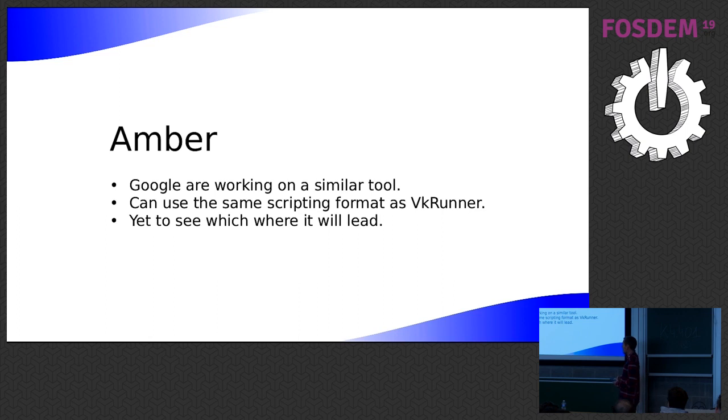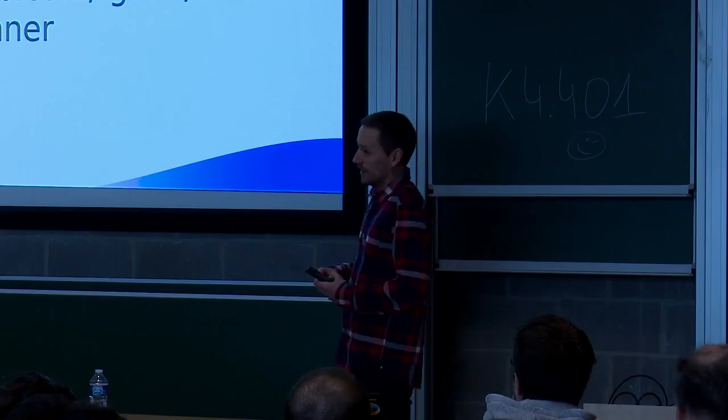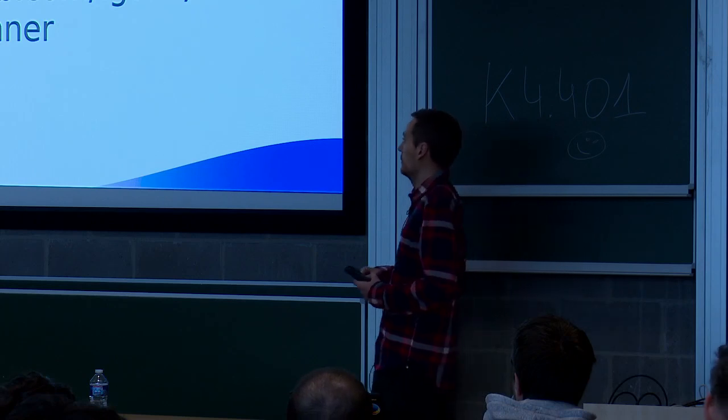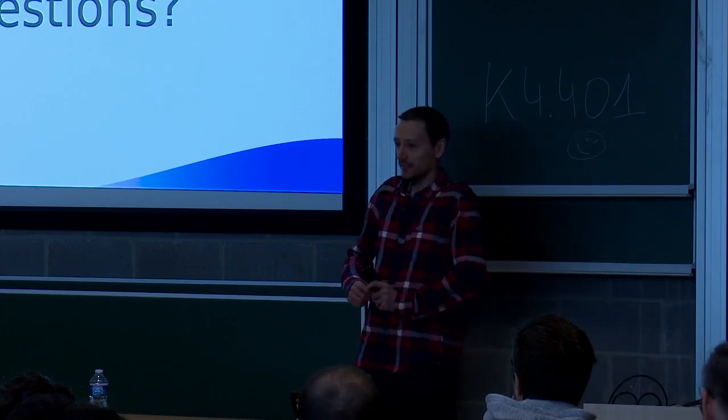So there's another project called Amber, which Google are working on. I think they were inspired by VK Runner. So that might be an interesting project to watch to see where it's going to lead. So that's the GitHub repo. It's got the same license as Mieser and Piglet. So take a look. Thanks. Any questions?